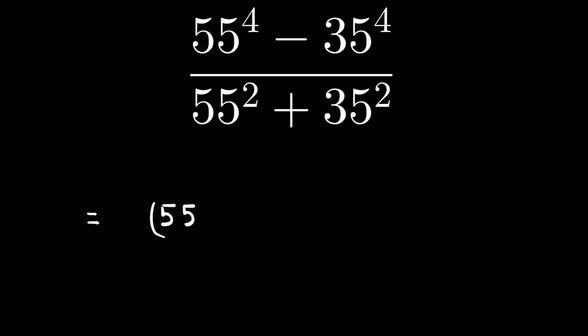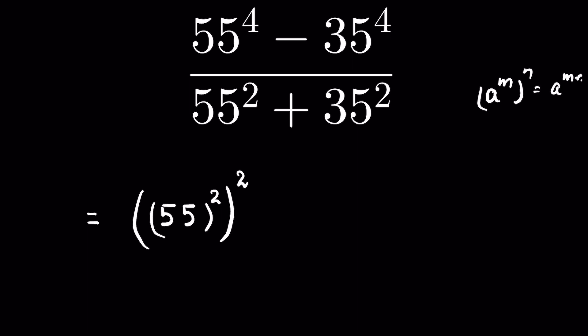Because when a raised to the power m, whole raised to the power n, this equals a raised to the power of m times n. So 2 times 2 gives us 55 raised to the power of 4, and similarly 35 raised to the power of 2 whole raised to the power of 2.